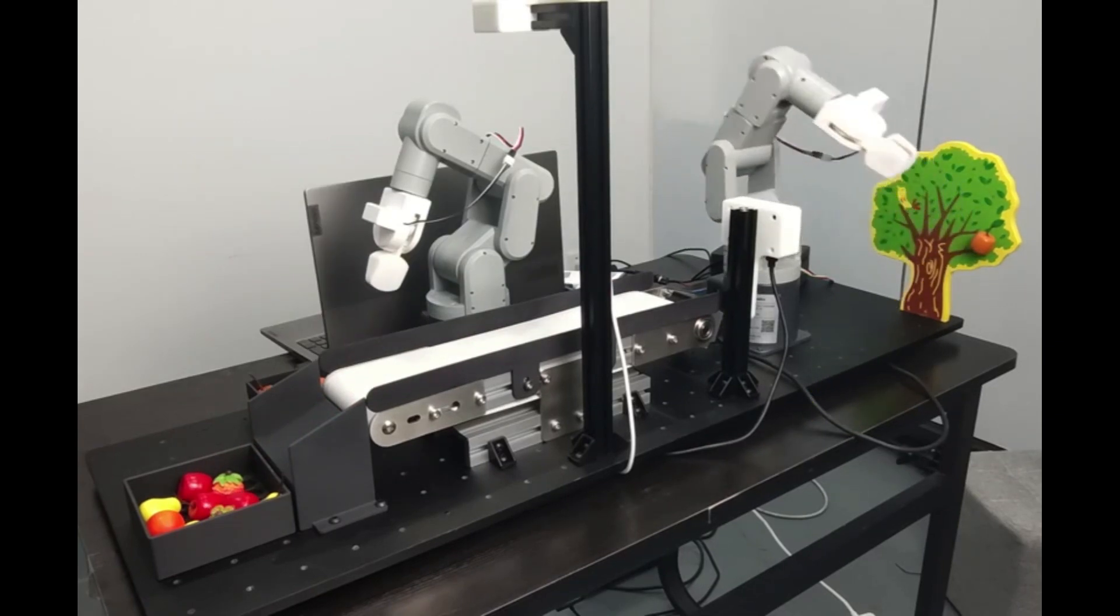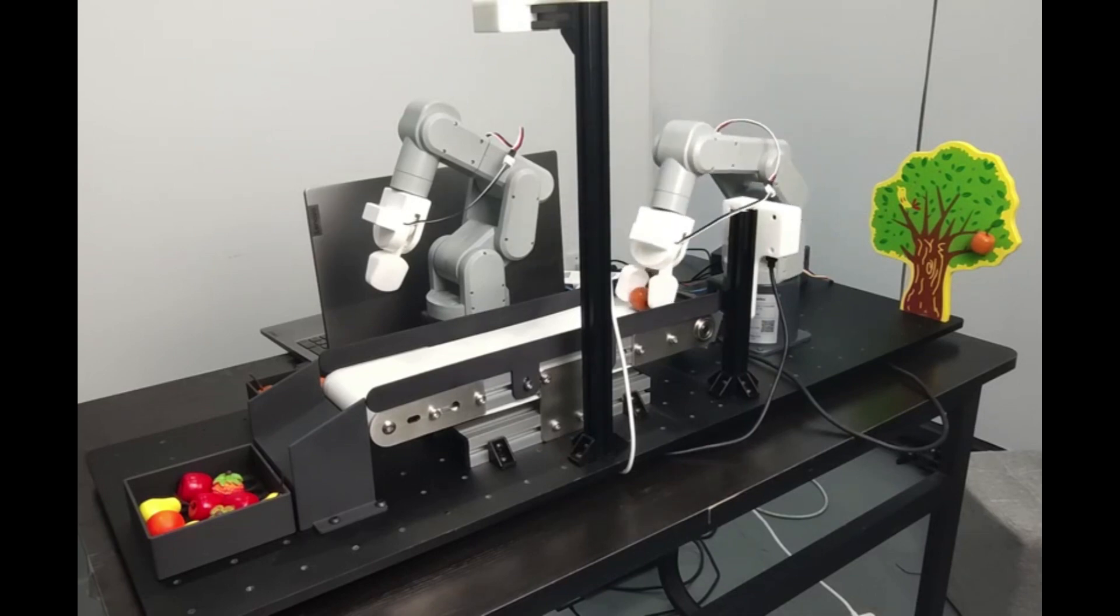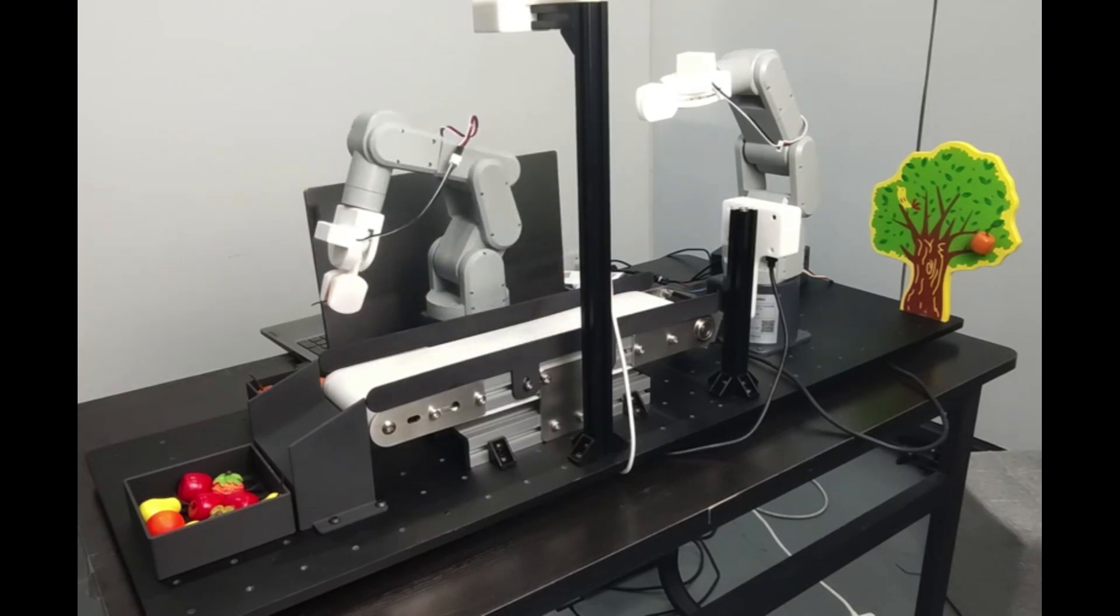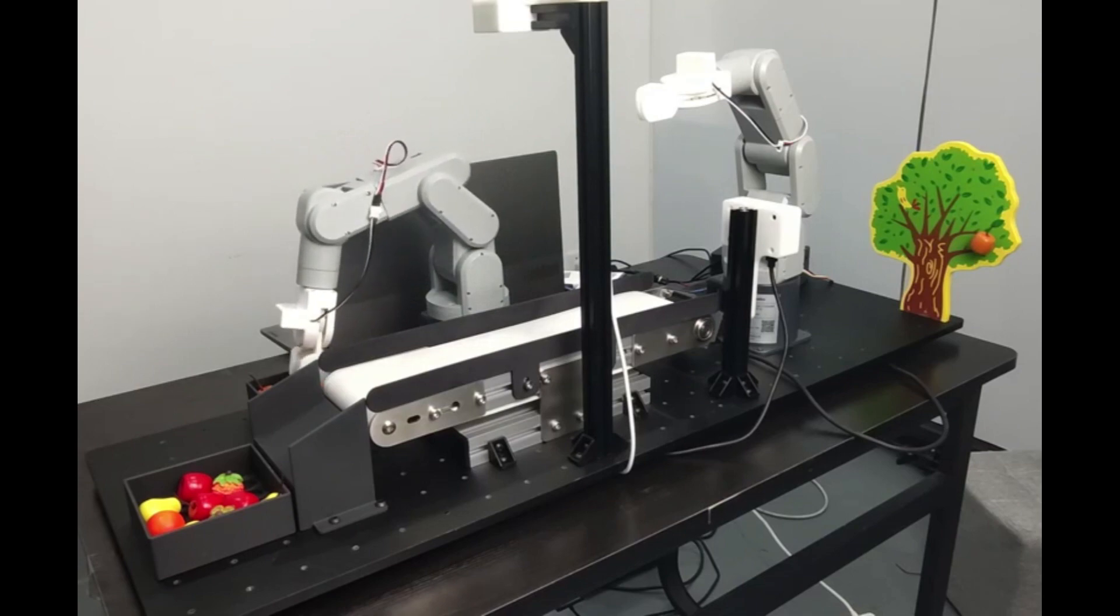The camera on top of Sorting Robot recognizes the fruit within its line of sight and uses an algorithm to determine the quality of the fruit. If it is considered good fruit, the fruit will be transferred by the conveyor to the fruit collection area.